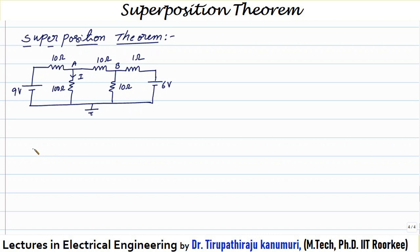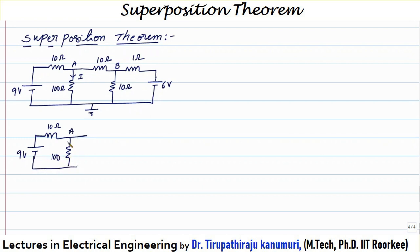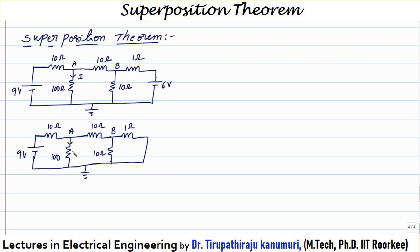In order to find this, we take one source at a time and analyze the current passing through this element as well as the voltage across the element. I am taking the 9 volts source first. When you are taking 9 volts, the other components are 10 ohms, 100 ohms, 10 ohms, 1 ohm, and the 6 volts is taken as 0. This is my reference point, and this is node A and node B.